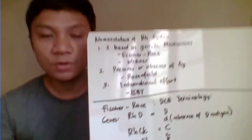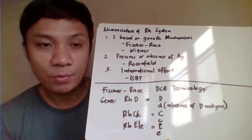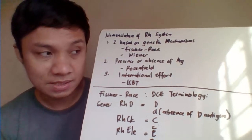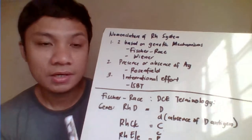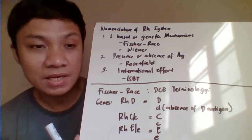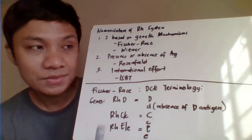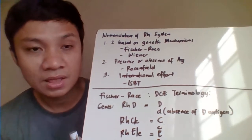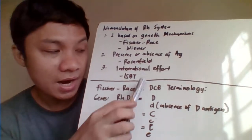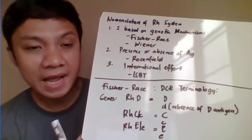Now we go to the different nomenclatures under the RH blood group system. The first nomenclature is Fisher & Race, and the second is Wiener — both have a genetic basis, signifying that we inherit our RH antigens from particular genes. The third is the Rosenfield nomenclature, which only denotes the presence or absence of RH antigens without a genetic basis. The fourth is the ISBT International Society of Blood Transfusion classification number.